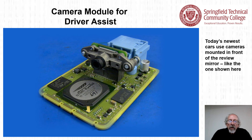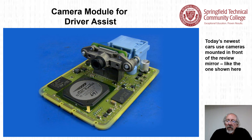The radar is shown as blue pulses while the camera also looks in the same forward direction. Today's newest cars use cameras mounted in front of the rear view mirror for driver assistance.